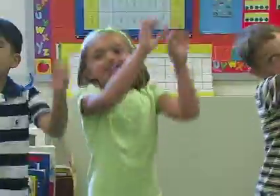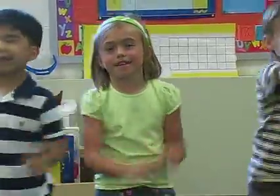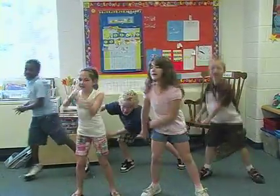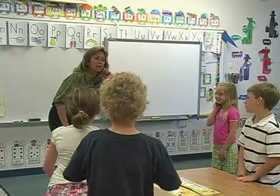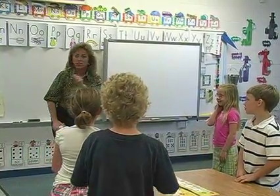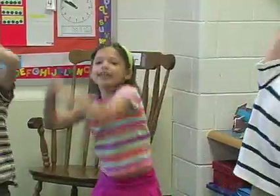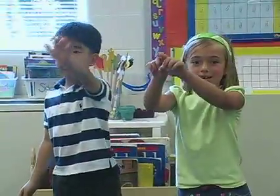We're sliding down to the end of the alphabet, sliding down to the end of the alphabet, sliding down to the end of the alphabet, sliding down to double U. Slide down and up and do it again, slide down and up and do it again, slide down and up and do it again. That makes W.